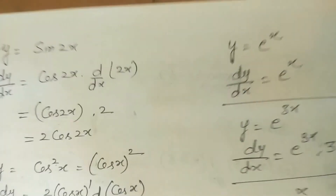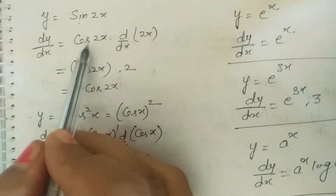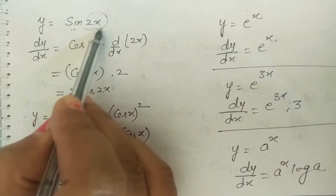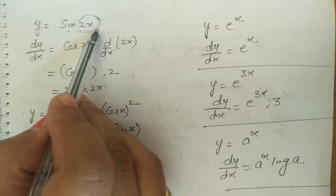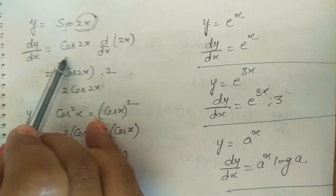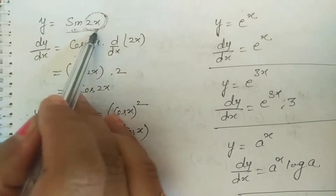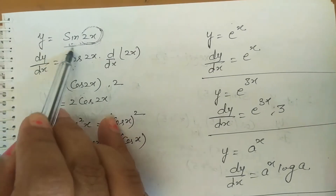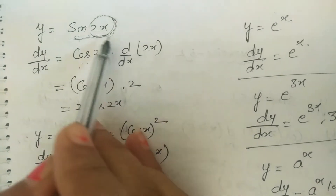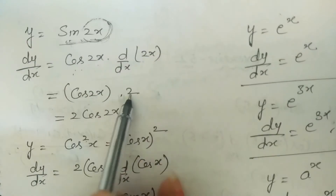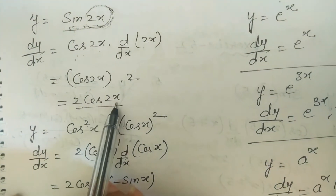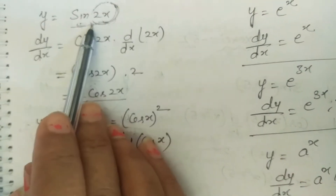We know derivative of sin x is cos x. But for sin 2x, where 2x is in place of x, we apply chain rule: derivative of sin 2x is cos 2x, then multiply by derivative of 2x which is 2. So the answer is 2·cos 2x.